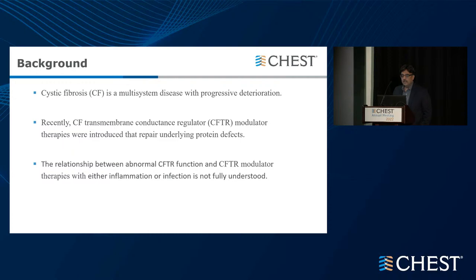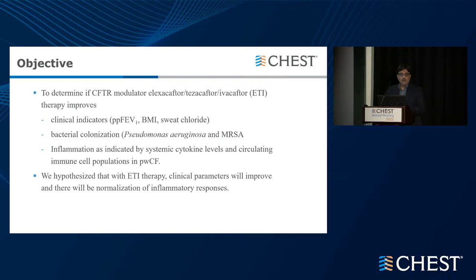CF is a multisystem disease with progressive deterioration. Recently, CFTR modulator therapies have been introduced which can repair the underlying protein defect, at least to some extent, but the relationship between abnormal CFTR function or CFTR modulator therapies with inflammation or infection is still not very well understood. The objective of this study was to determine if the CFTR modulators — ETI in brief — improve clinical indicators, decrease bacterial colonization, and improve inflammation as measured by systemic cytokine levels and circulating immune cell populations in patients with CF. We hypothesized that it does.